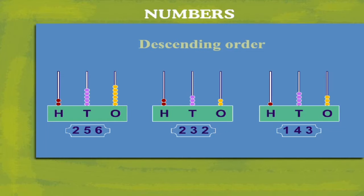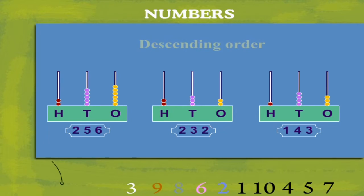And what is their descending order? It is two hundred and fifty six, two hundred and thirty two and one hundred and forty three.